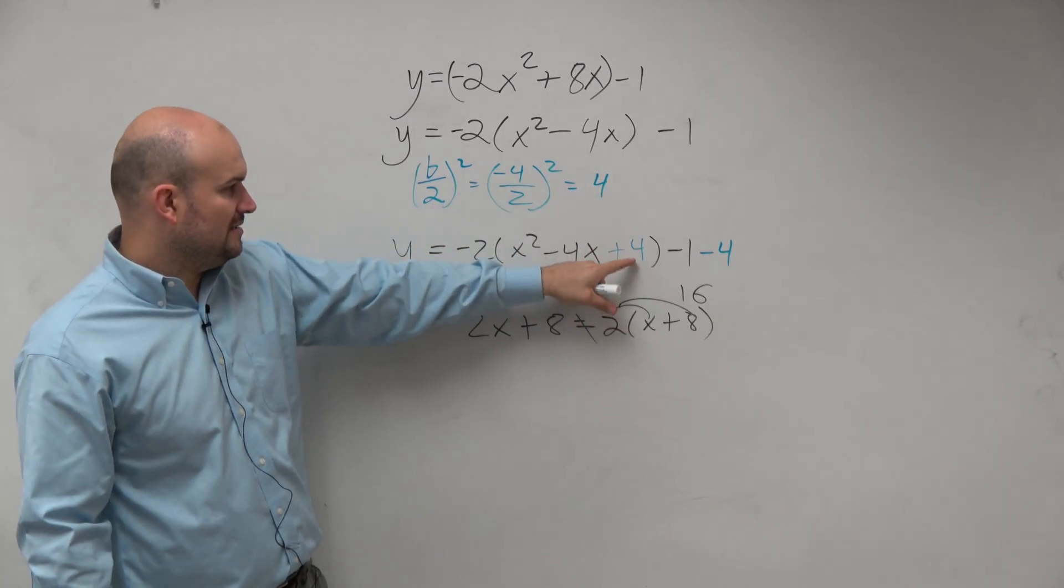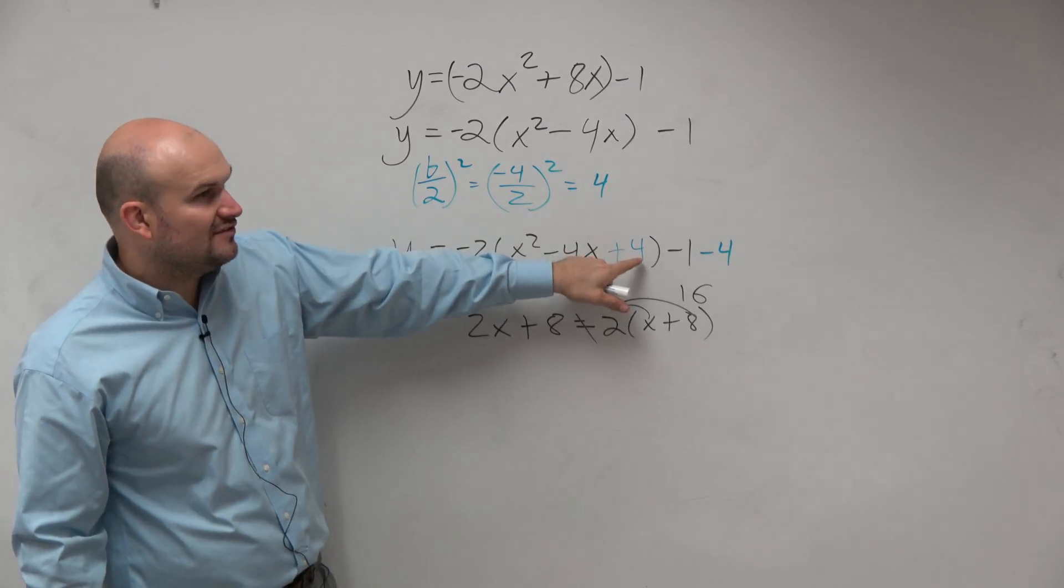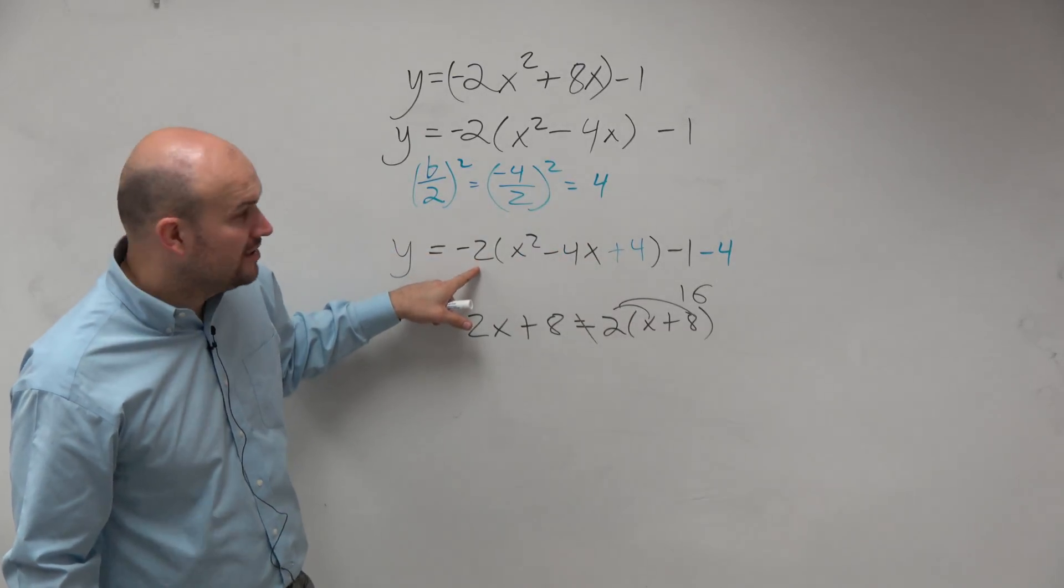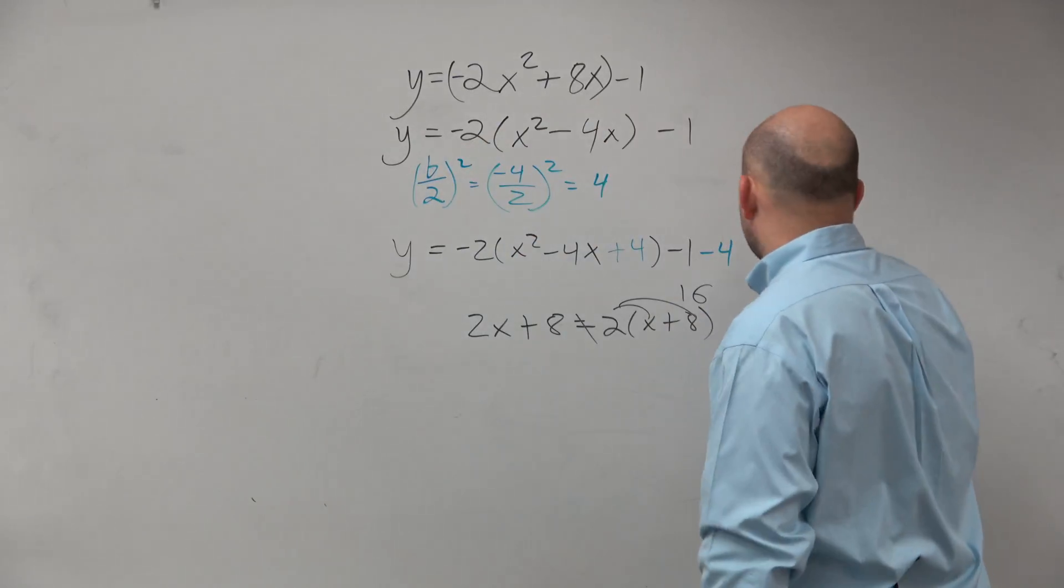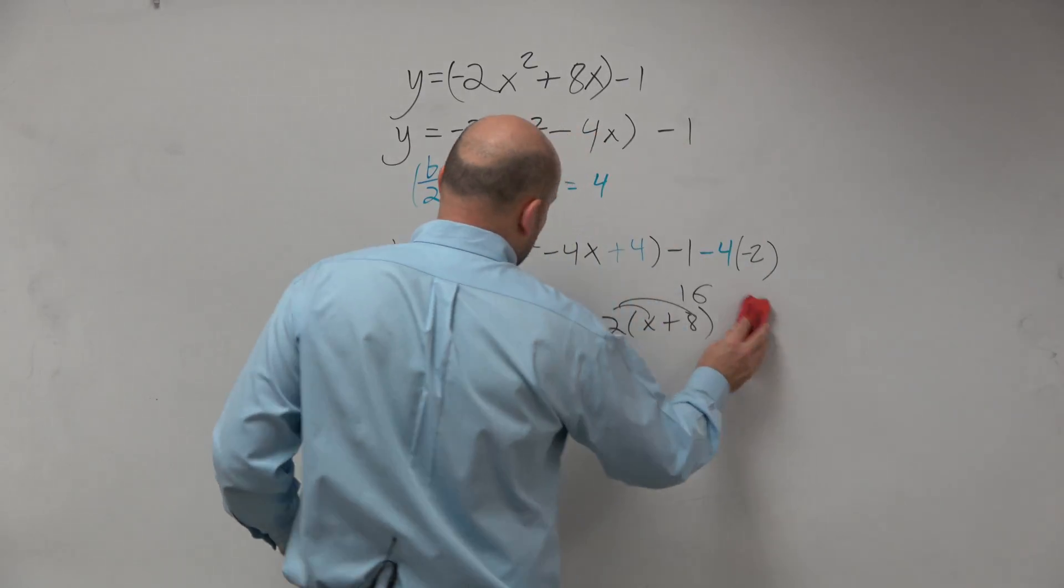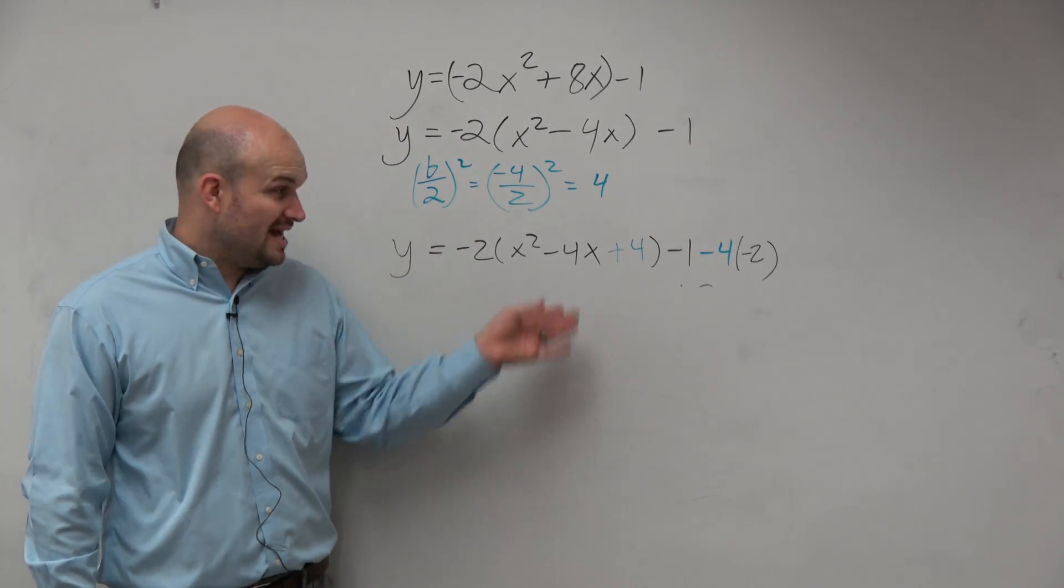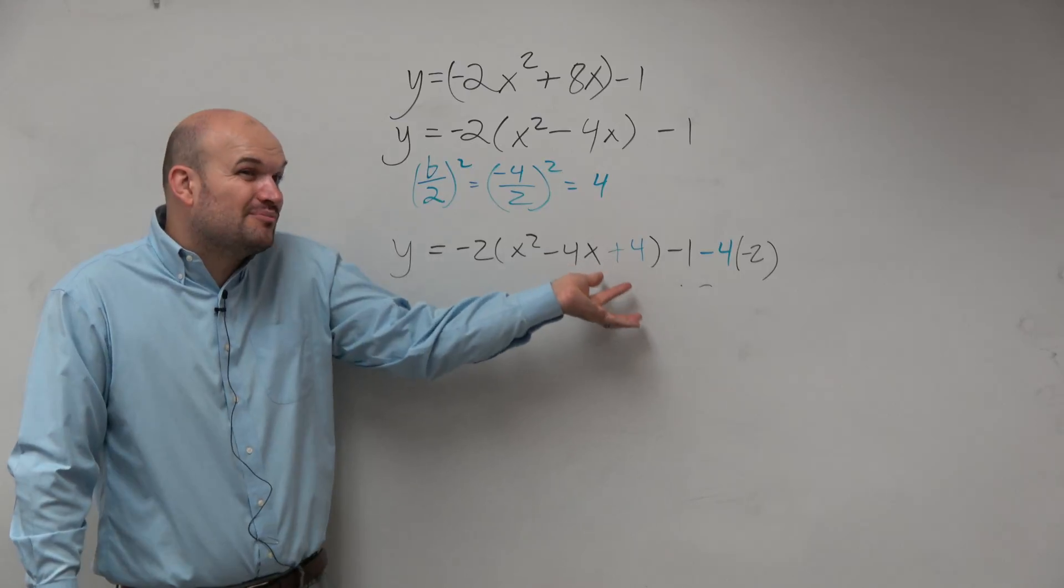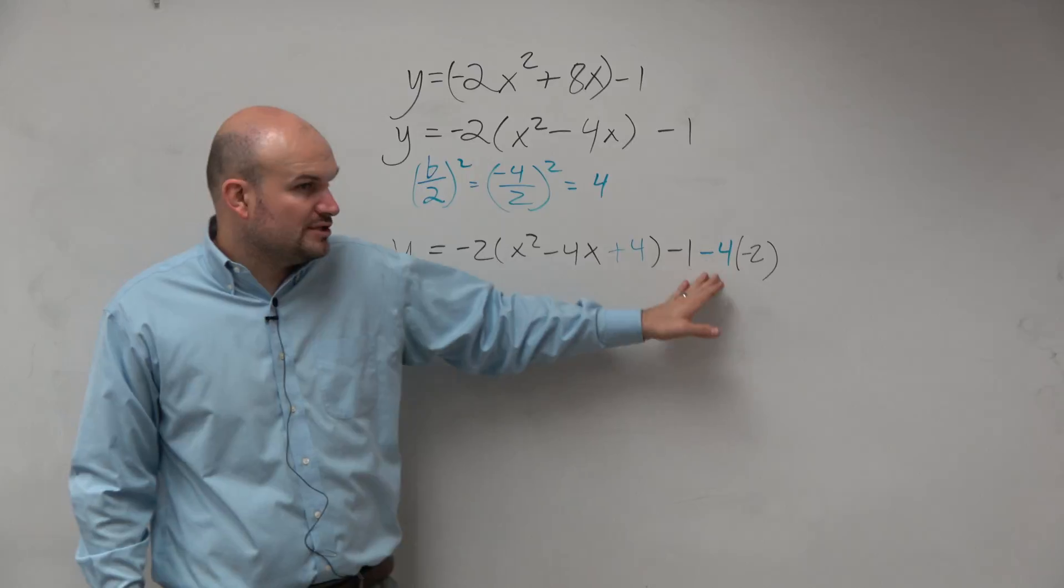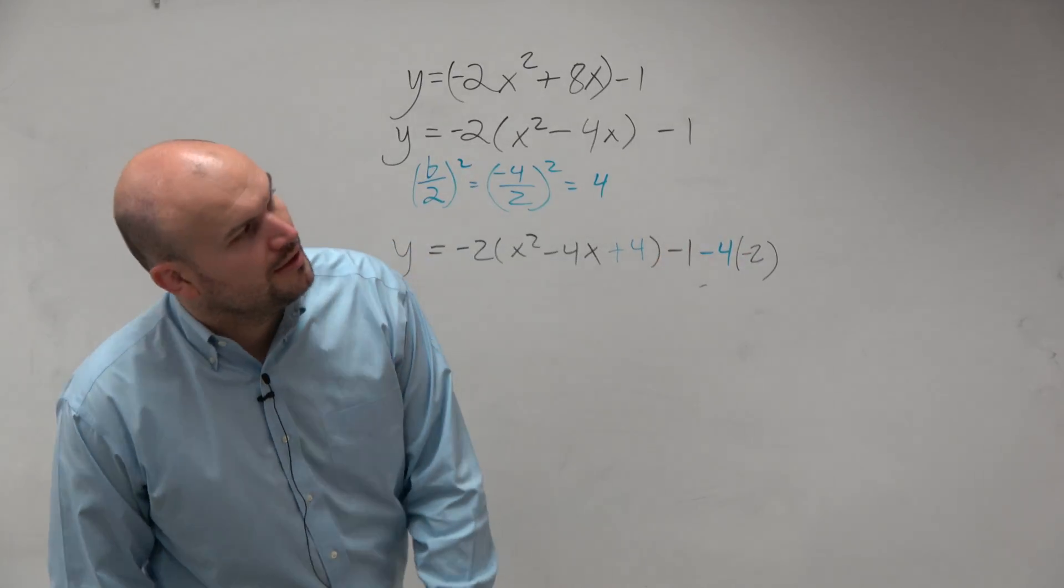This 4 is really being multiplied by a negative 2. So you're not adding 4 and subtracting 4. You're adding a 4 that got multiplied by a negative 2. So you have to subtract a 4 that's being multiplied by negative 2. Really, really important stuff. But does that make sense? You're not adding 4. That 4 is inside parentheses that are multiplied by a negative 2. So therefore, when you subtract a 4, you've got to make sure you multiply that by negative 2 as well.